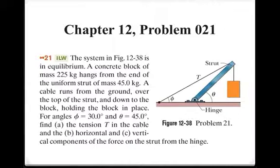We're given two angles, the angle between the horizontal and the strut, and the angle between the horizontal and the cord. And we are asked to find the tension T that exists within that cable, and the horizontal and vertical components of the force on the strut from the hinge.